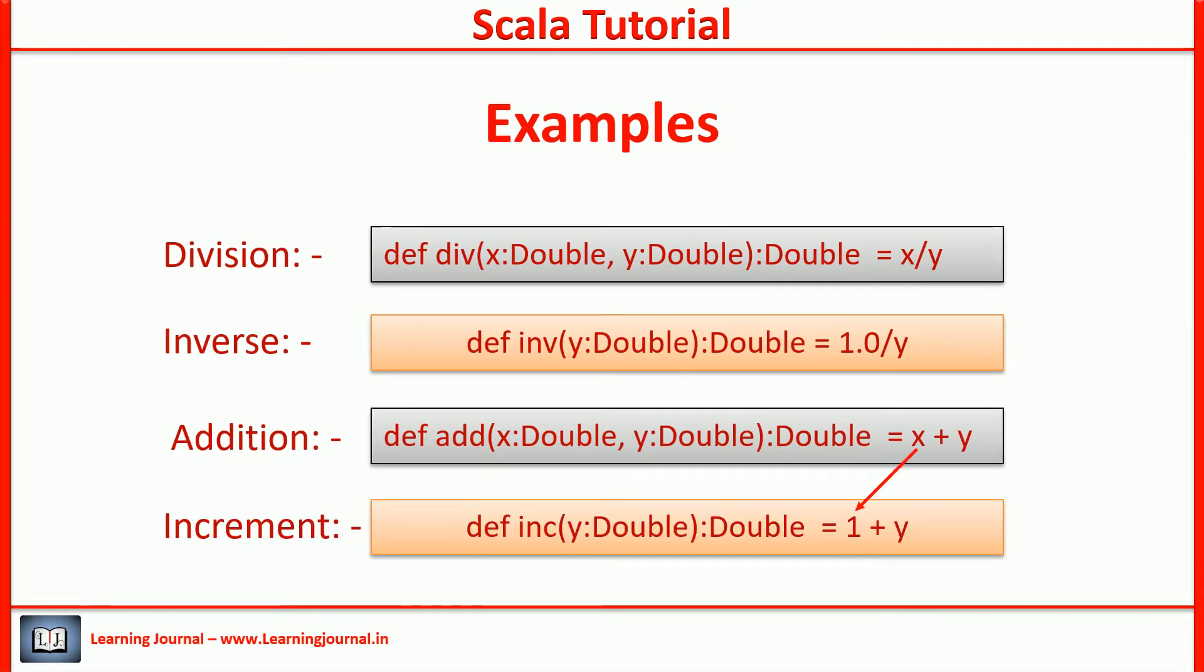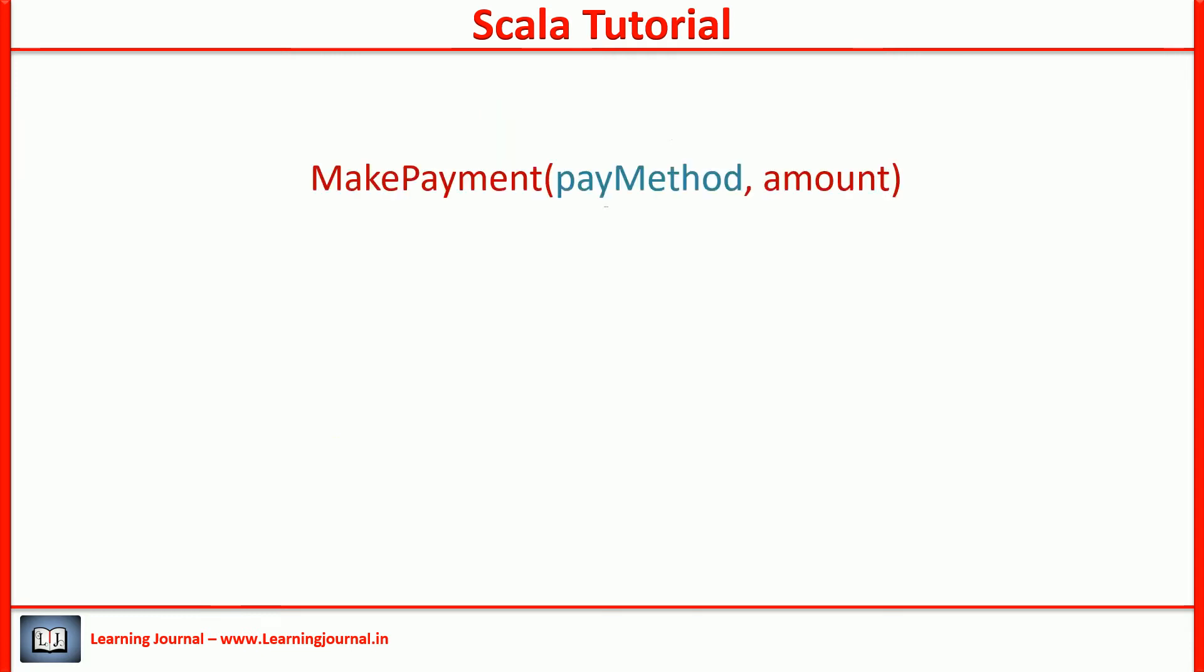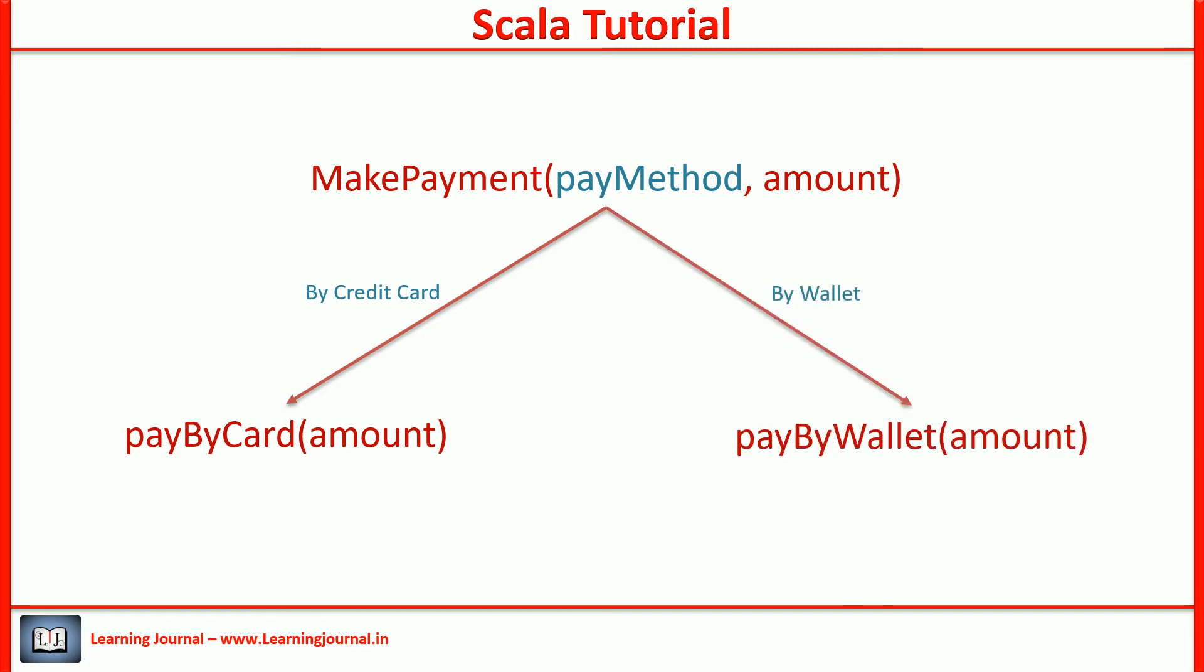You fix the first variable to 1 and the division becomes an inverse operation. Similarly, you set the first variable to be 1 and the addition becomes an increment operation. Inverse and increments are entirely new solutions. Let's say you have a function to charge a customer for an online purchase. It takes two parameters: the payment method and the amount. You fix the payment method to the credit card and it becomes a new function: pay by credit card. Similarly, you can create other specialized cases like pay by wallet.